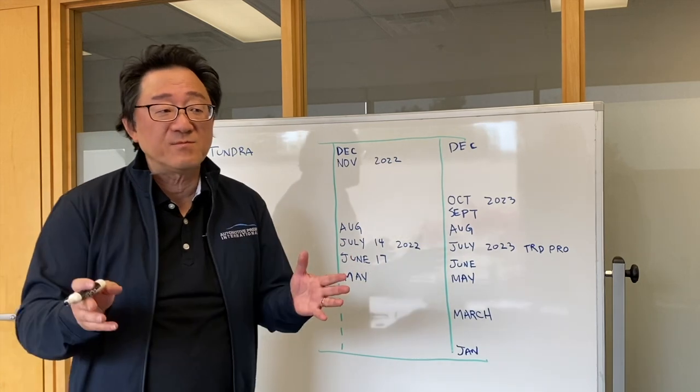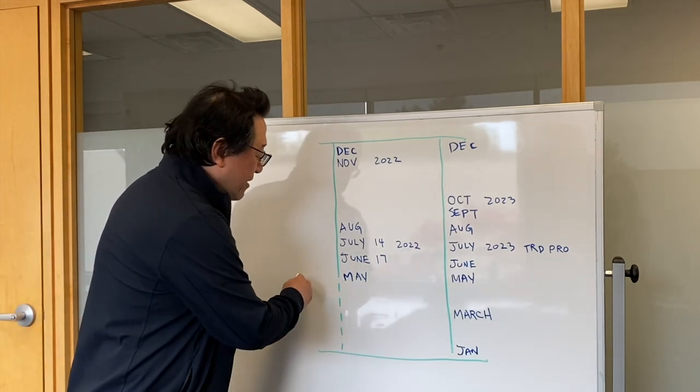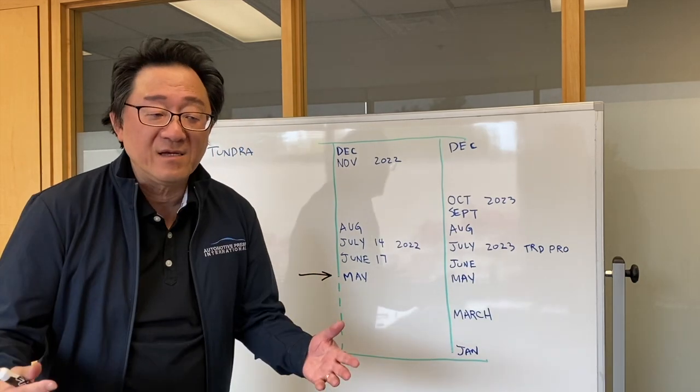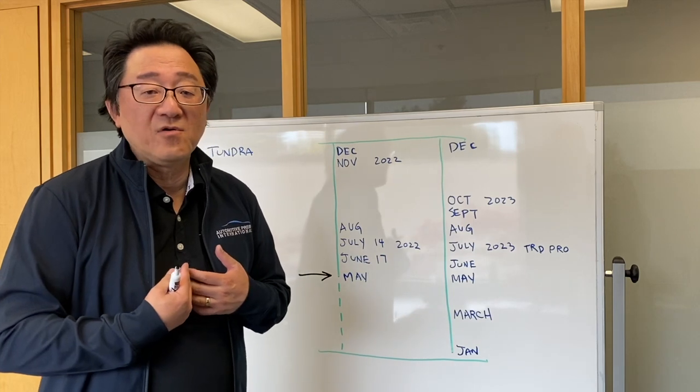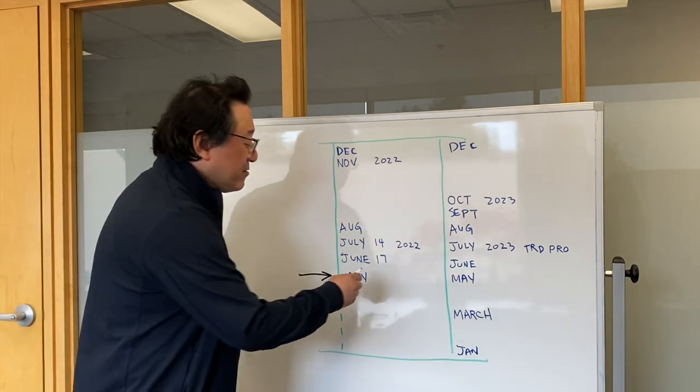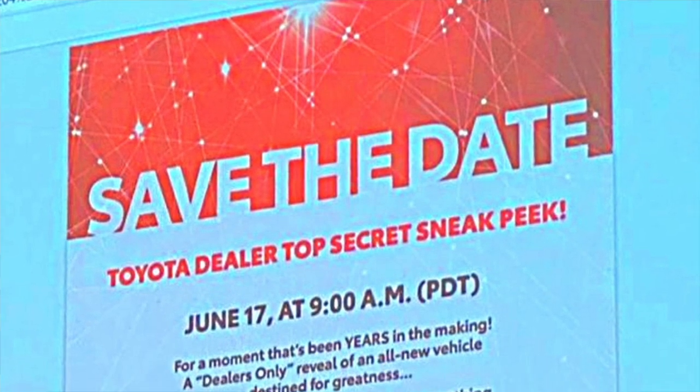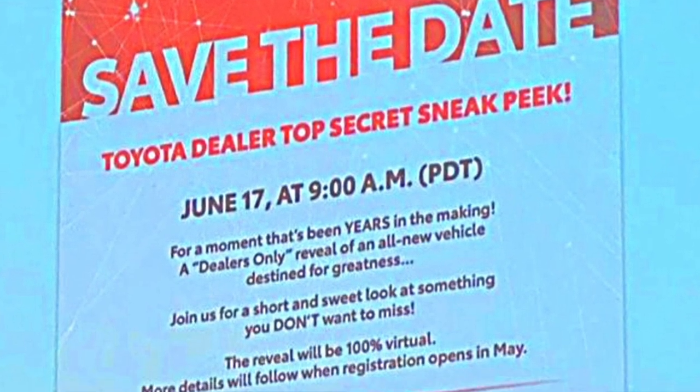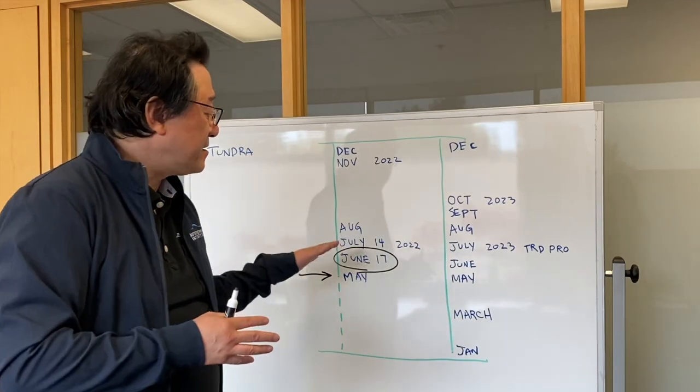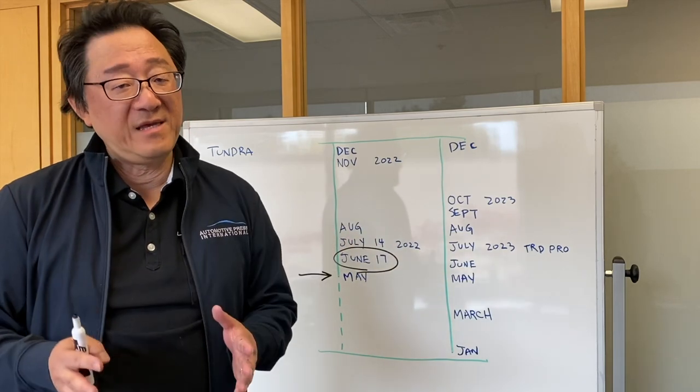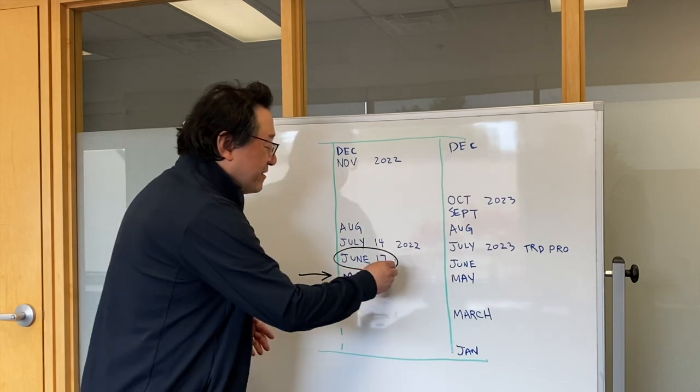If you recall and if you watched my previous videos, you know that we are right now in the main timeframe and we are still getting leaked photos through my channel for example, but not the real photo yet. Now I said that looks like June 17th is a time when Toyota will allow the dealers and the dealer managers to see the 2022 Tundra. Apparently that's the date for a sneak peak of the final version of the Tundra.